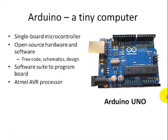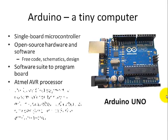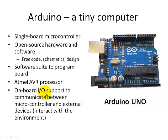The Arduino Uno also provides numerous onboard I/O support — input/output support — to communicate between the microcontroller and the external devices so you can interact with the environment. There are a lot of input and output pins for you to interface with different sensors and displays.